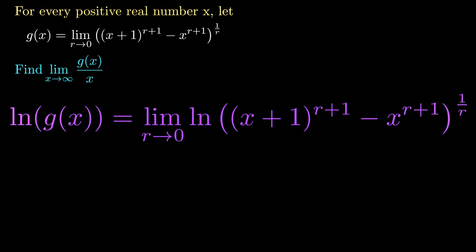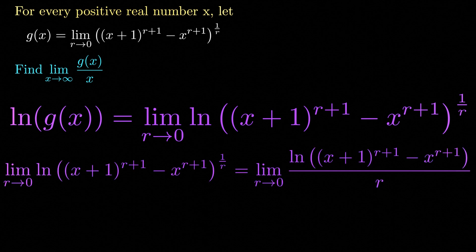So we have the natural logarithm of g of x is equal to the limit as r approaches 0 of the natural logarithm of x plus 1 raised to r plus 1, minus x raised to r plus 1, all raised to 1 over r. Using properties of the natural logarithm, we bring the power down to get the natural logarithm of that expression divided by r.